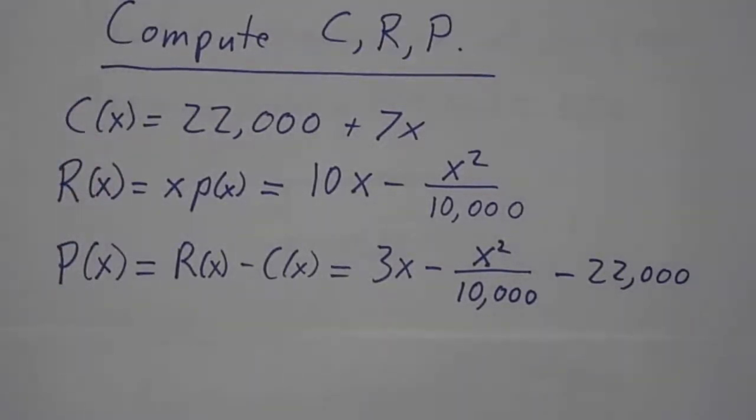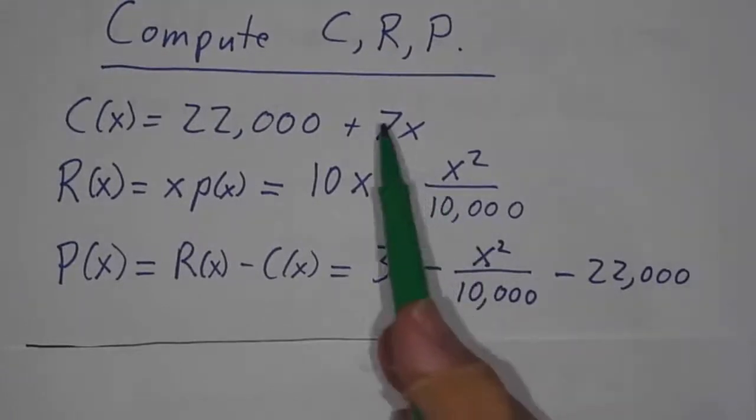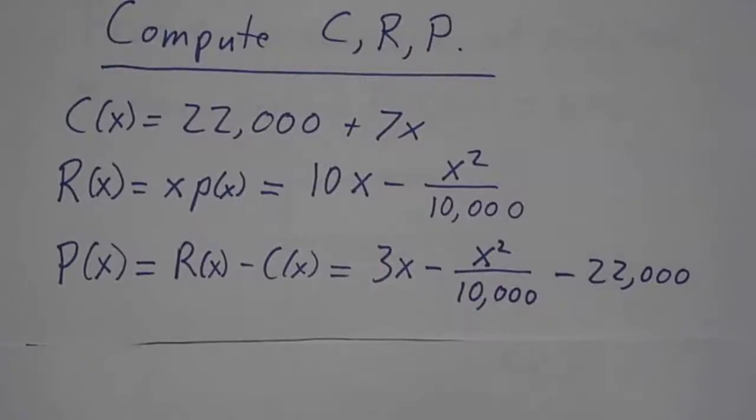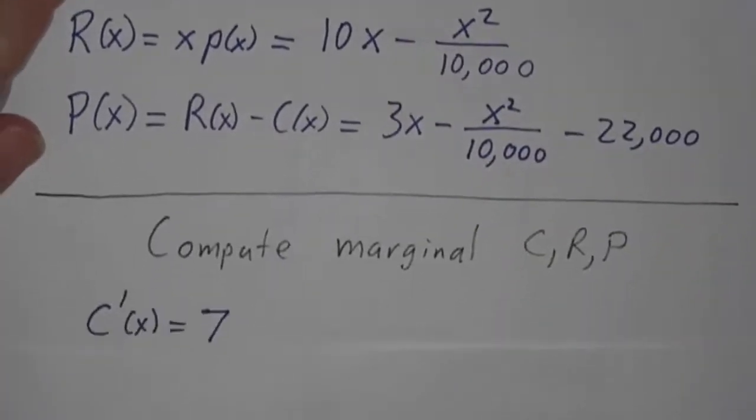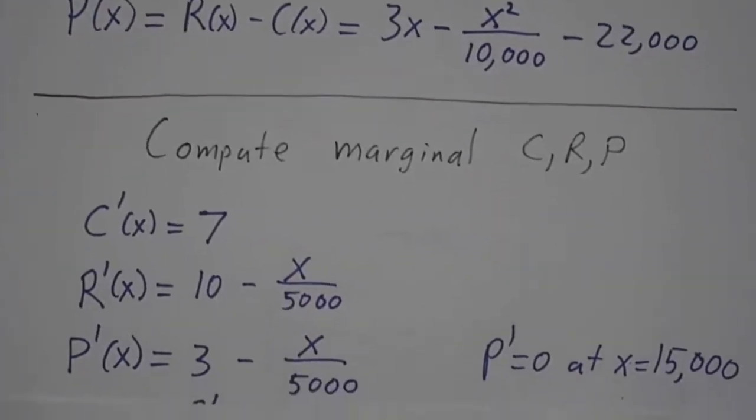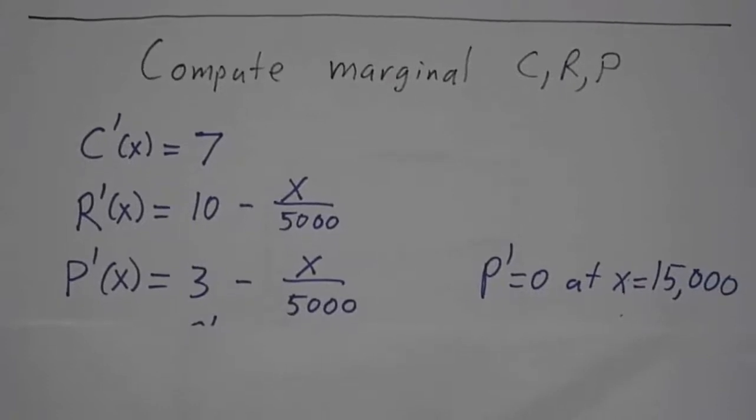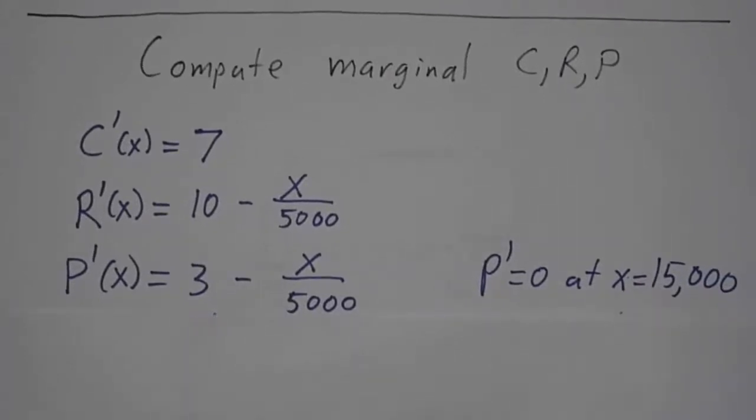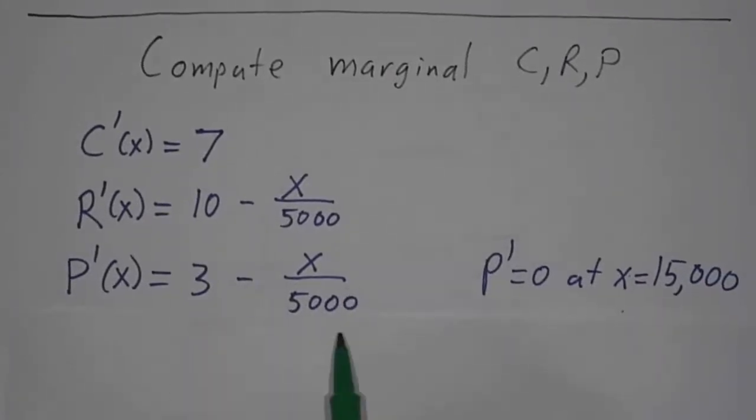Then what you want to do is compute the marginal cost, the marginal revenue, and the marginal profit. So that means you need to take the derivatives of these functions with respect to X. Fortunately, that's pretty easy. The derivative of 22,000 plus 7X is 7. The derivative of the revenue function is 10 minus X over 5,000. And the derivative of the profit is 3 minus X over 5,000.